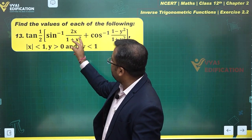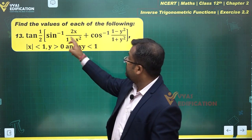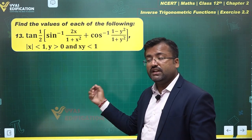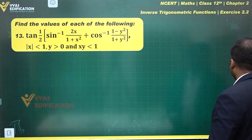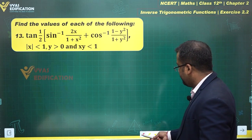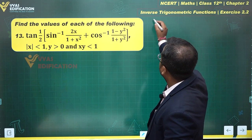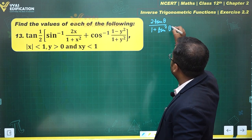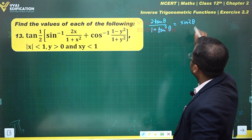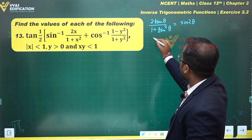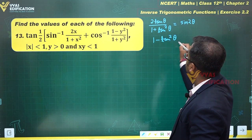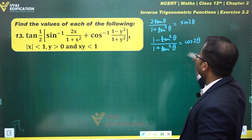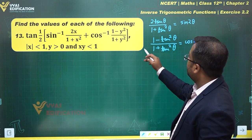We observe carefully: 2tanθ/(1+tan²θ) is of the form that becomes sin inverse sin2θ, and (1-tan²θ)/(1+tan²θ) becomes cos inverse cos2θ. So the two formulas required are: 2tanθ/(1+tan²θ) = sin2θ, and (1-tan²θ)/(1+tan²θ) = cos2θ.